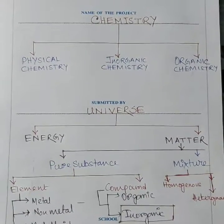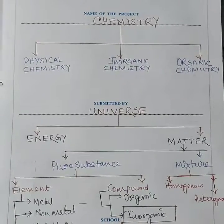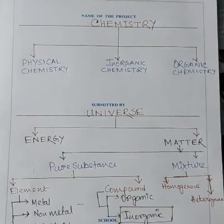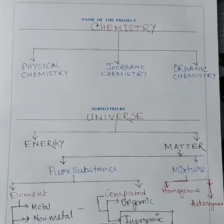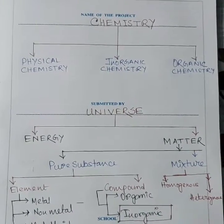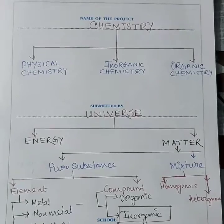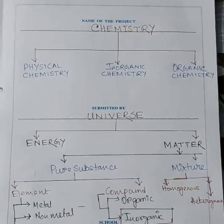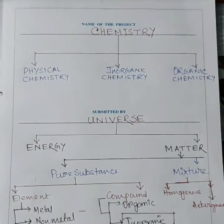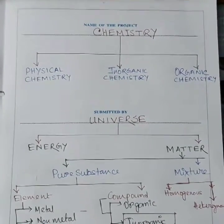Chemistry mainly has three branches: physical, inorganic, and organic. The whole universe can be classified into energy and matter. Energy is related to physics, and matter is classified into two divisions: pure substance and mixture. Pure substance is further classified into elements and compounds, and mixtures into homogeneous and heterogeneous. Elements can be classified into metals, non-metals, and metalloids. Compounds are organic and inorganic. Today I will start with inorganic chemistry.